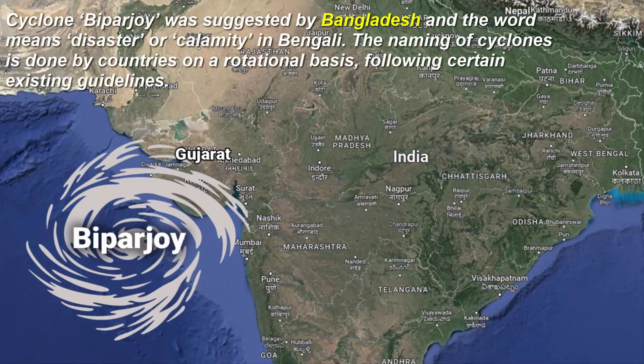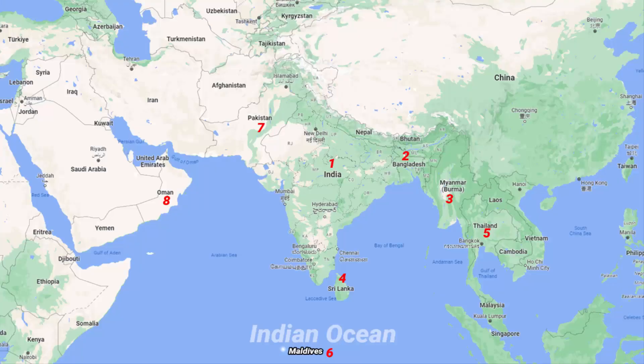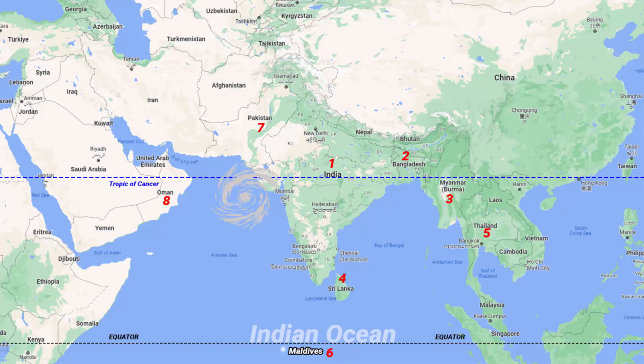This cyclone is named Biporjoy, taking into consideration the Bengali pronunciation where the letter A is pronounced as O. Although the spelling is Biporjoy, the pronunciation in Bengali follows the O sound. Now due to India's location within the tropical region, this cyclone can be categorized as a tropical cyclone.